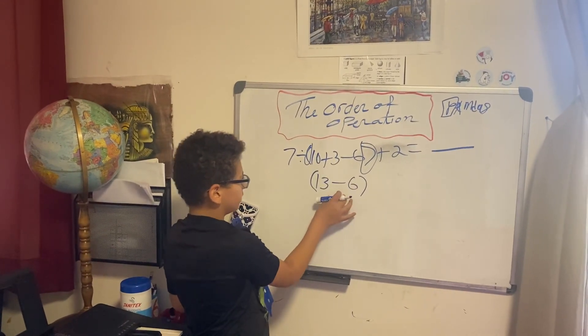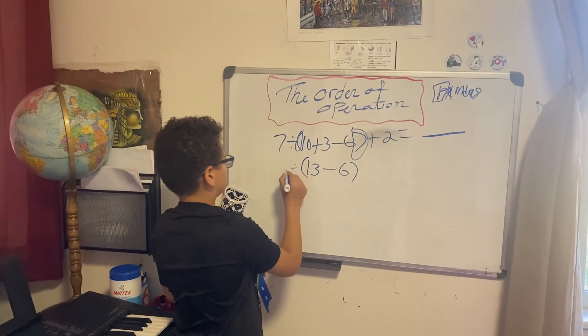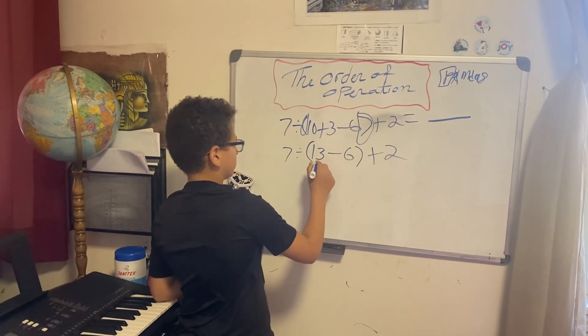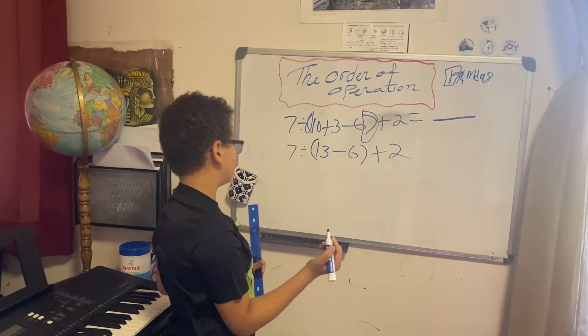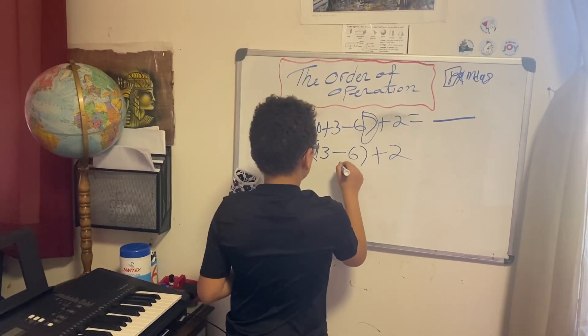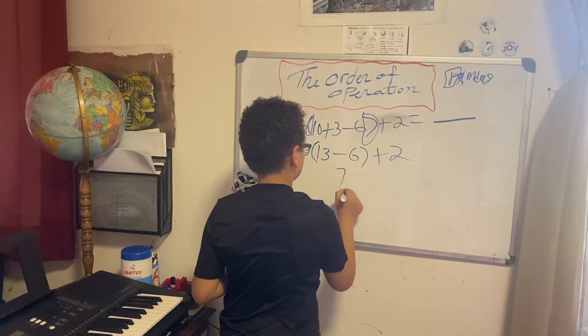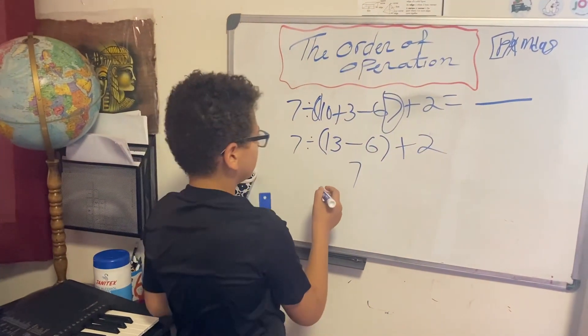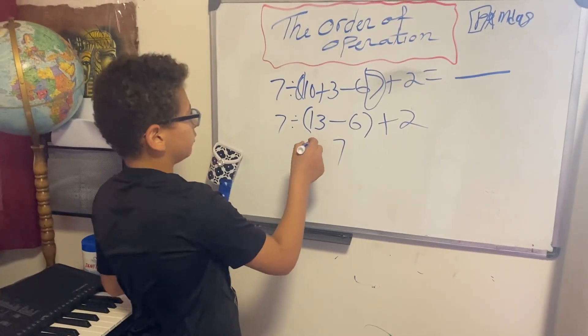You always have to write the problem out. So 13 minus 6, as we all know, is 7. We take the parentheses away because we don't need them anymore because we already did the problem.